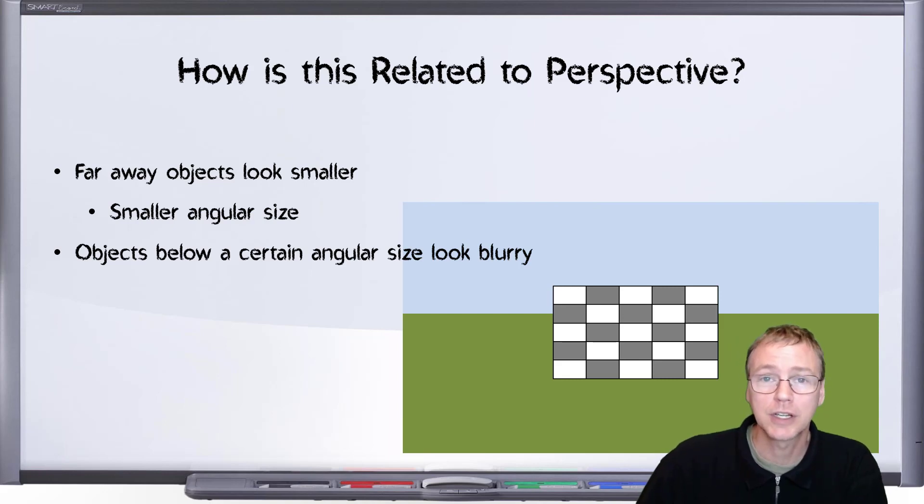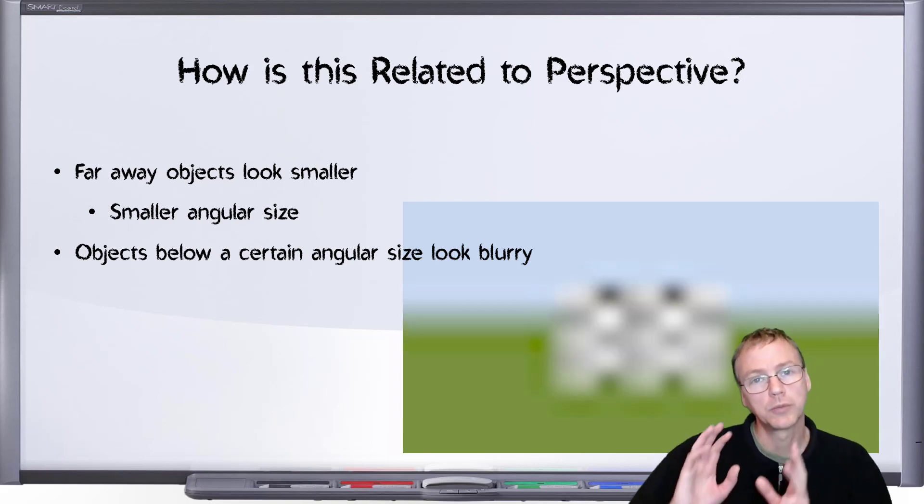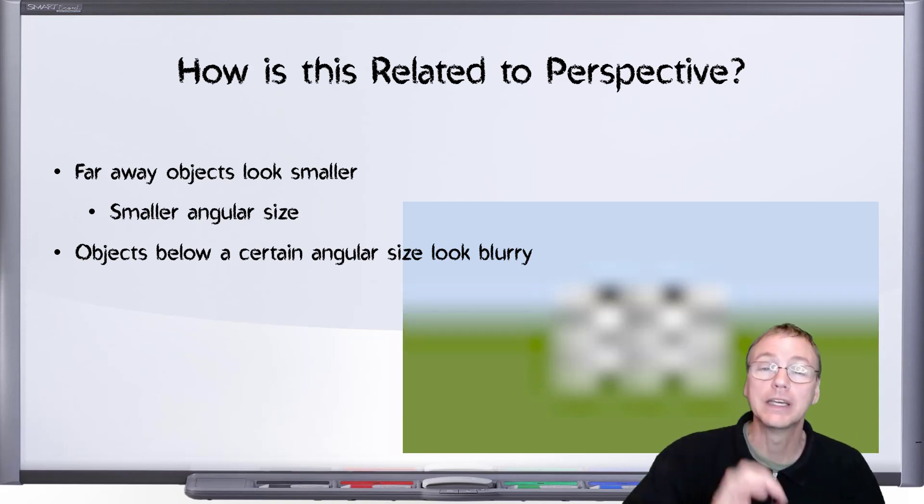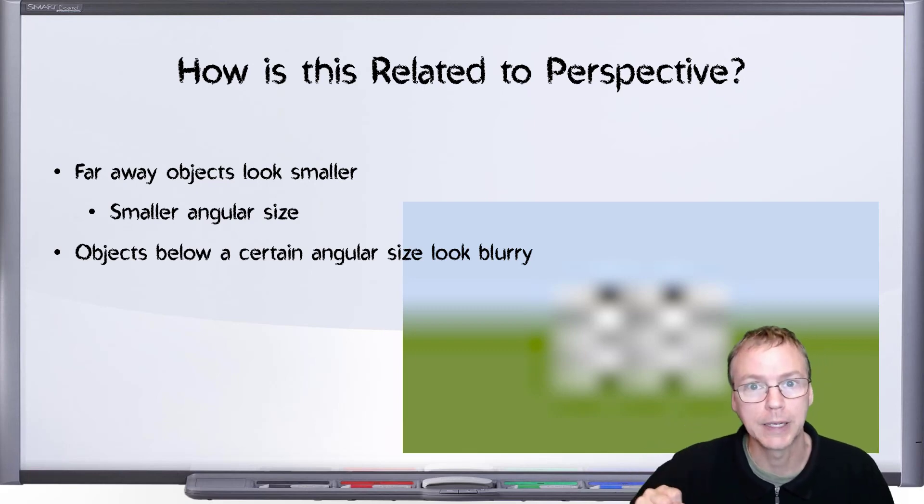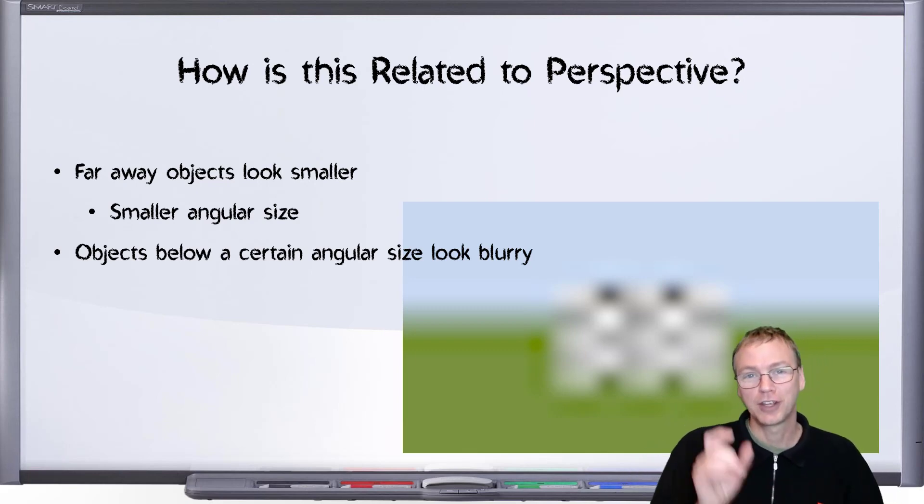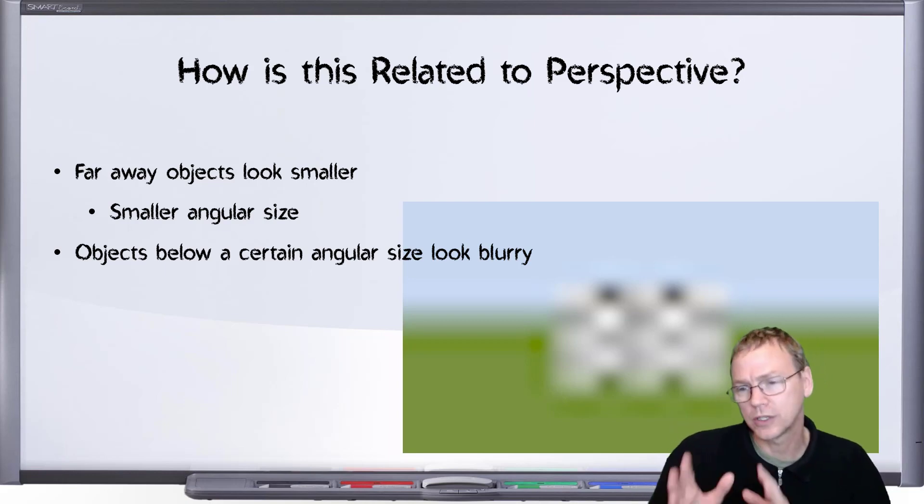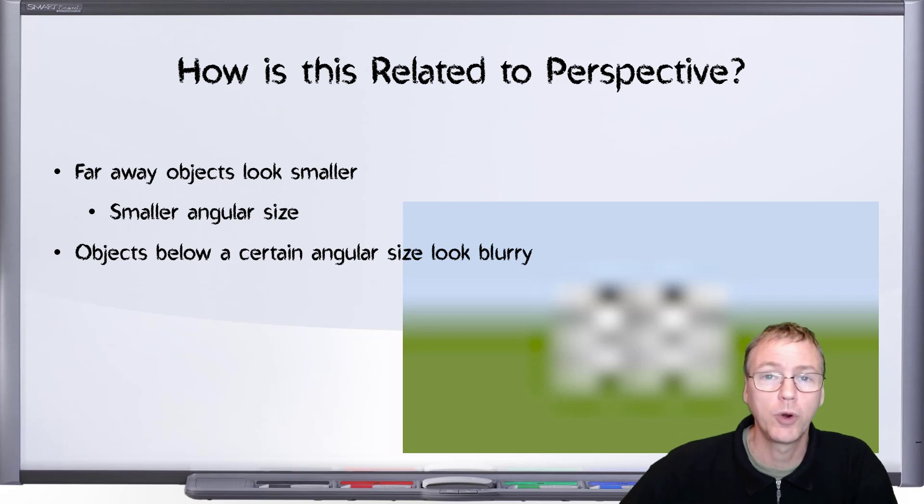And the Rayleigh criterion tells us that as the object becomes smaller and smaller, it begins to become blurry. The Rayleigh criterion gives us an angular size at which we can't even make out the checkerboard anymore. And the object appears to be nothing more than a blurry mass of uniform color.